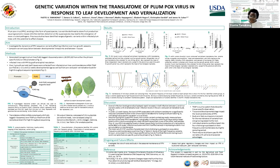To investigate PPV variant dynamics, we analyzed NTS data generated from ribosome-associated RNA, which are likely being translated and thus actively contributing to the infection process. RNA was isolated from infected plum leaves at 2, 4, 6, and 12 weeks post-leaf emergence during two separate growth periods.